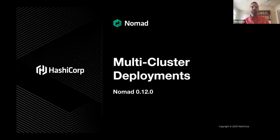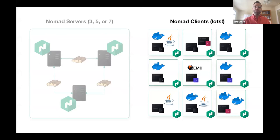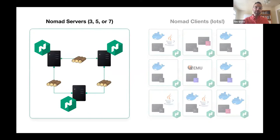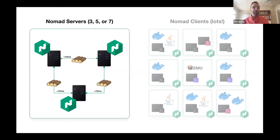My name is Tim Gross, I'm an engineer on the Nomad team. Before we can really talk about multi-cluster deployments, we need to know a little bit about how and why we federate Nomad clusters. Each Nomad cluster has a group of servers and a group of clients. The clients are where you run your workloads — Docker, Podman, Java, exec, whatever. A cluster can have many clients; in fact, there are Nomad clusters with thousands of client nodes. The servers are the brains of the cluster, and no matter how big, each cluster has between three and seven servers. These servers agree on scheduling decisions using an algorithm called Raft — the same algorithm that Consul and Vault use.